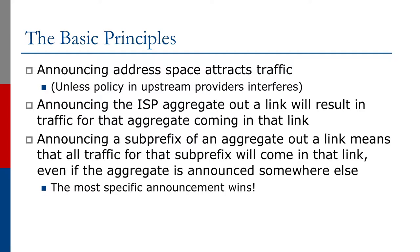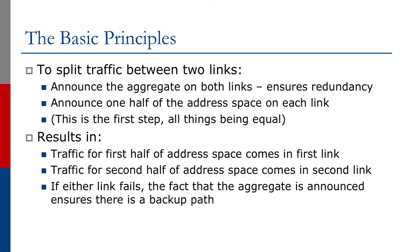It's important to remember the most specific announcement always wins — it is not possible to override it. To split traffic between two links, we announce the aggregate on both links, and that ensures redundancy. We then also announce one half of the address space on each link: the first half on the first link, the second half on the second link. This is just the first step — this is not the final solution. Traffic for the first half of the address space should come in the first link, traffic for the second half should come in the second link. If either link fails, the fact that we are announcing the aggregate ensures that there is a backup path.